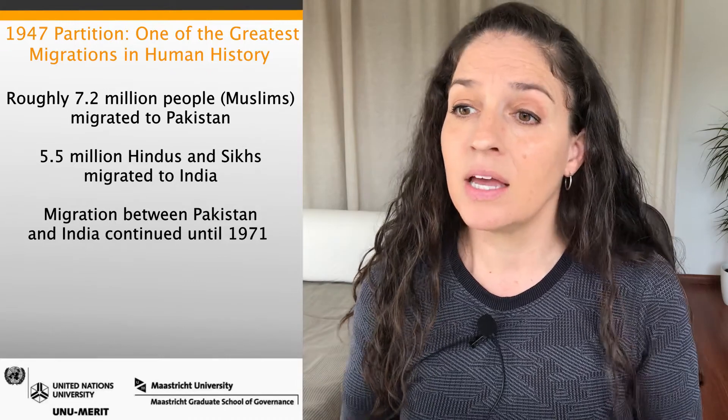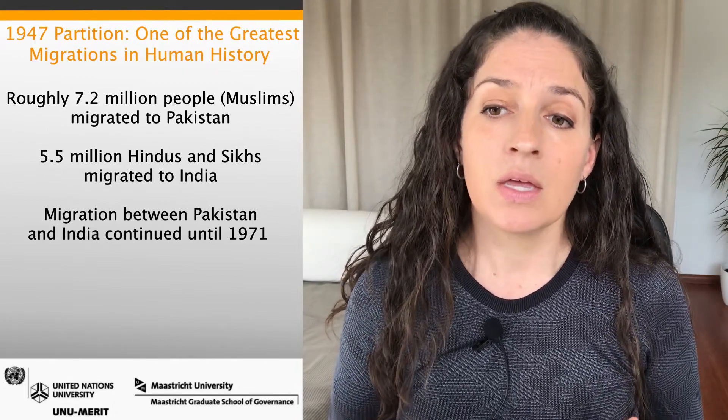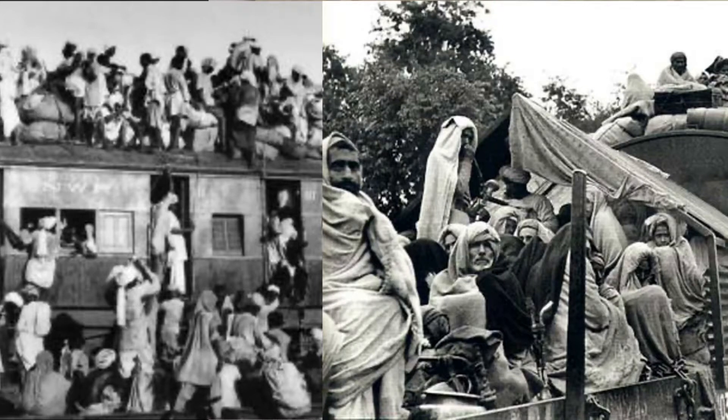This migration was mainly driven by religious reasons, resulting in a huge population swap. Roughly 7.2 million Muslims migrated to Pakistan and 5.5 million Hindus and Sikhs migrated to India. These were also mainly migrants who had settled in the canal colonies previously in Pakistan. Migration between Pakistan and India continued until 1971, and the migration resulting from partition had a very large impact on the politics, economics, and sociology of the region.